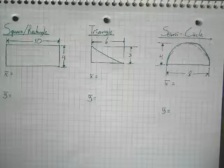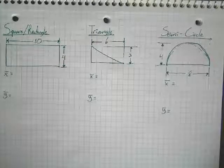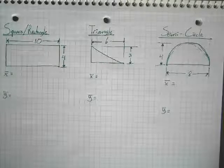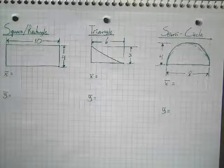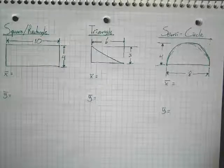Our square, our rectangle, our triangle, and our semicircle. Now we're going to go through some simple problems on how to find the centroid of these shapes when you have actual dimensions in front of you.